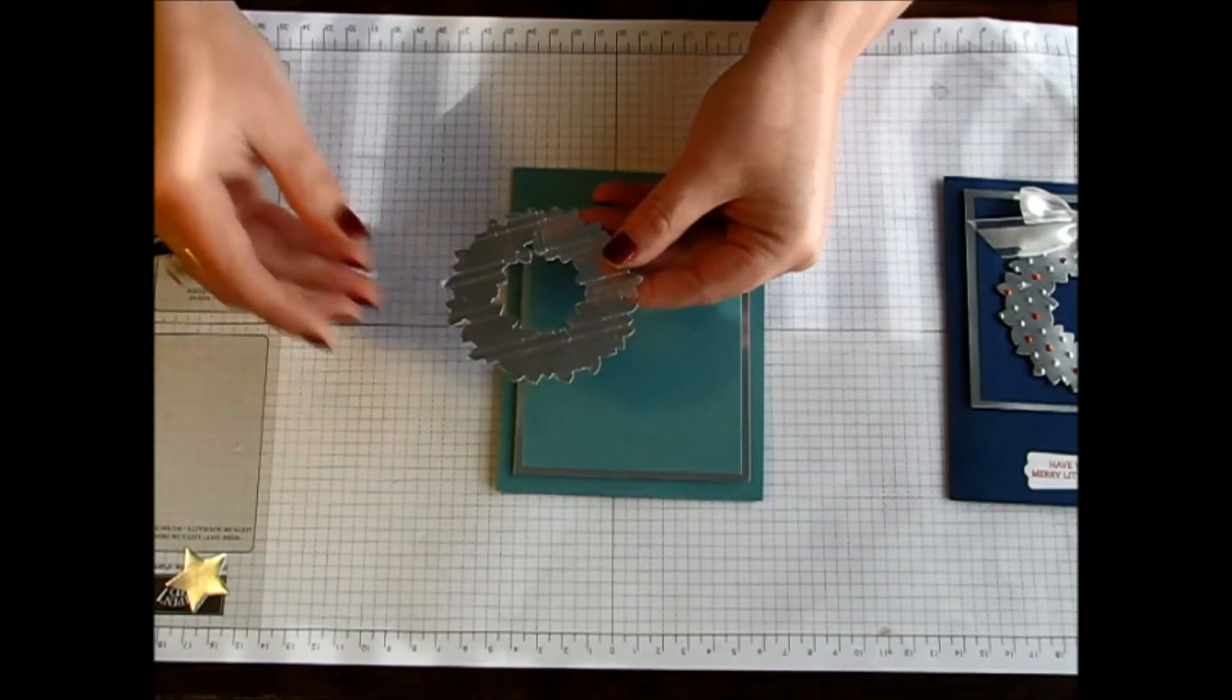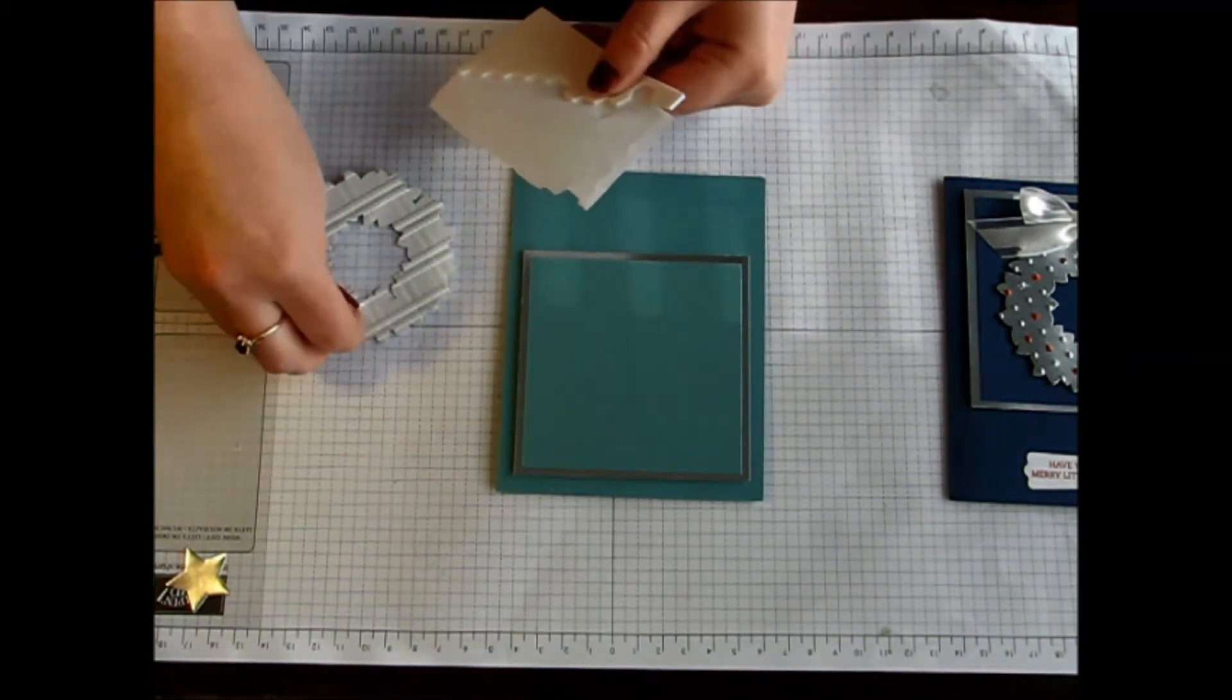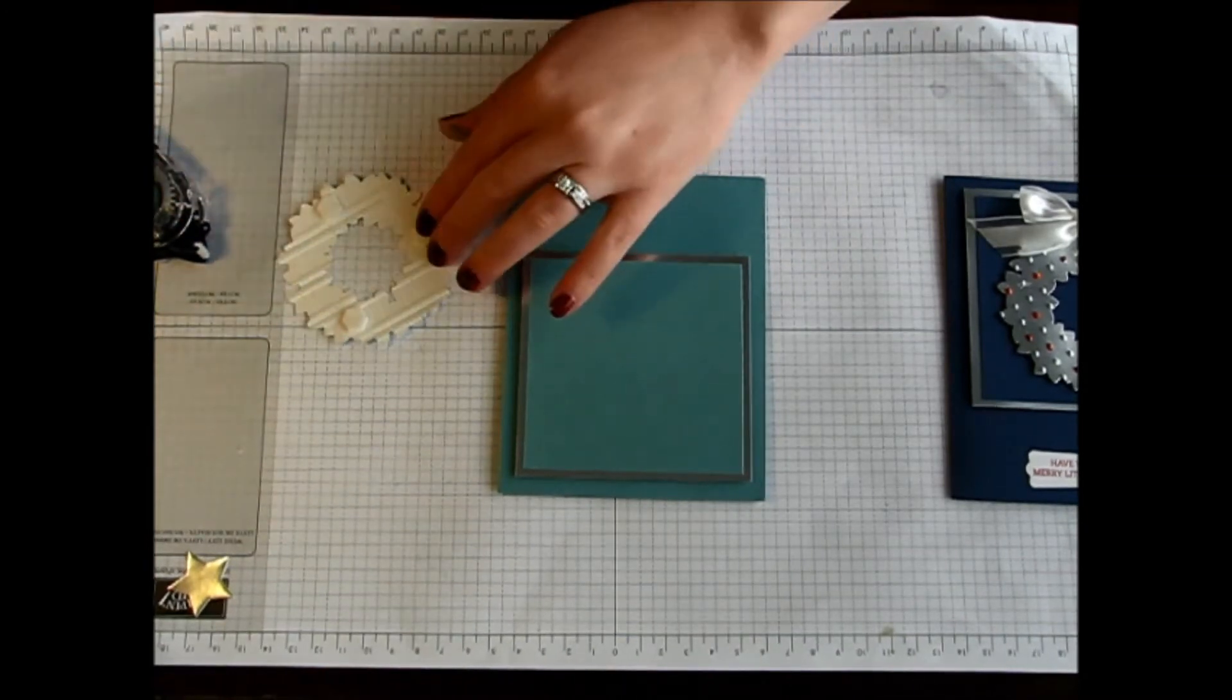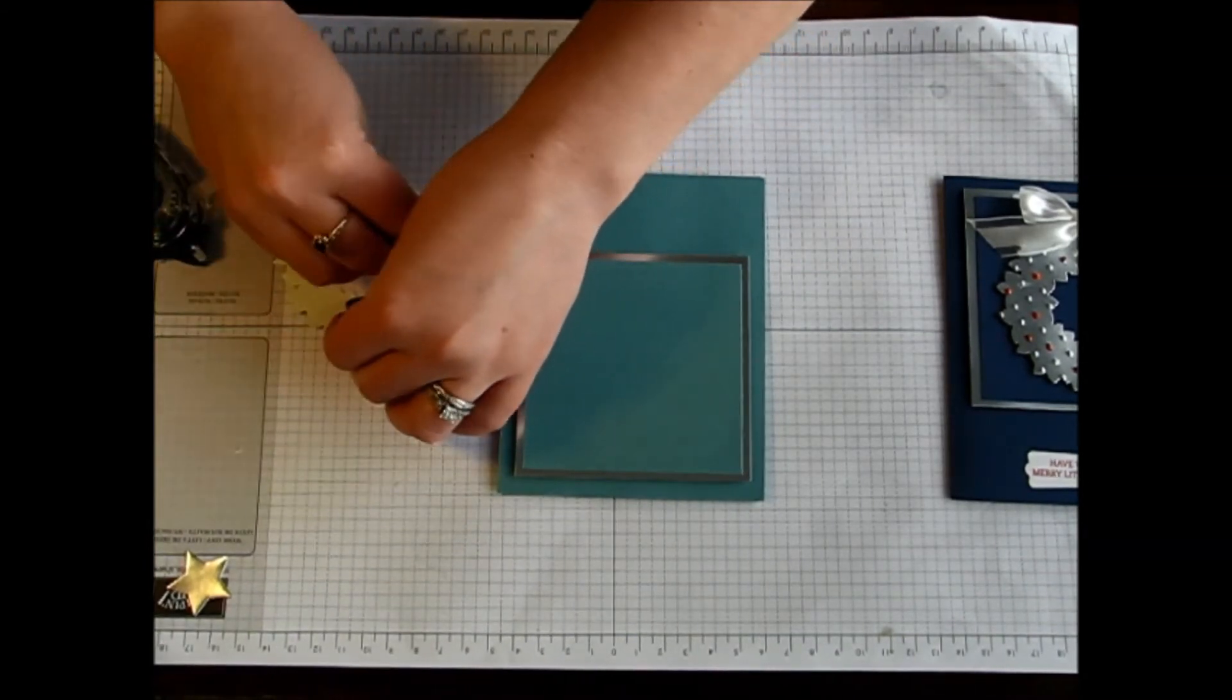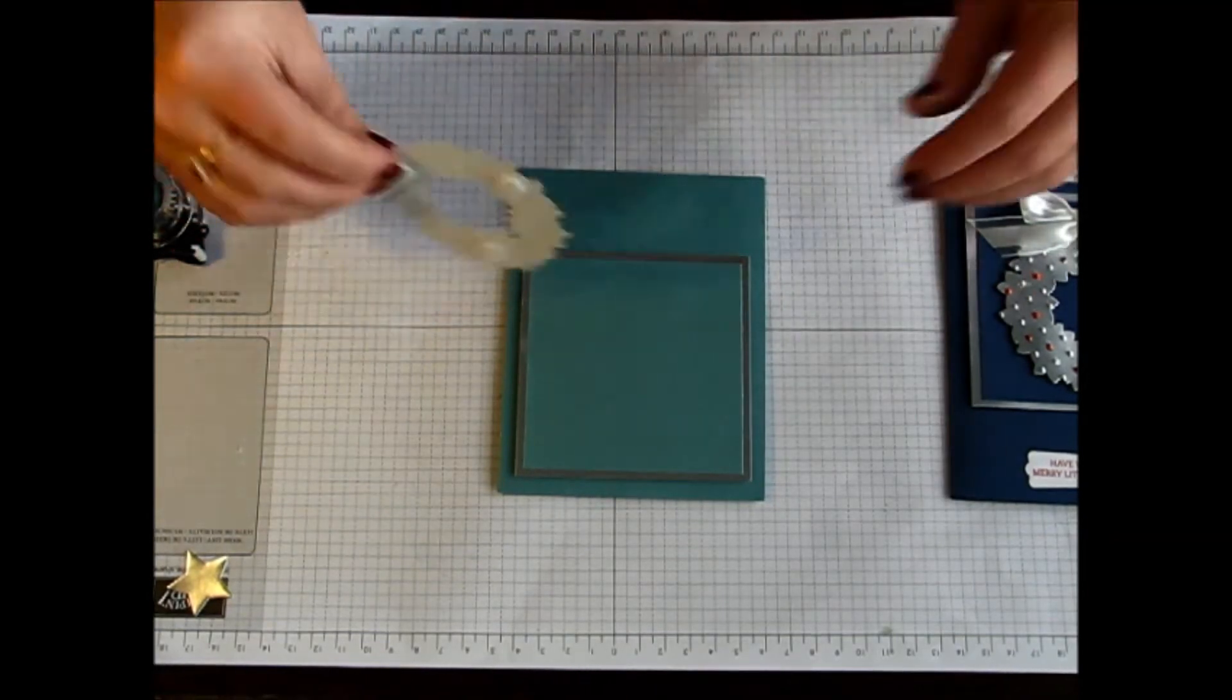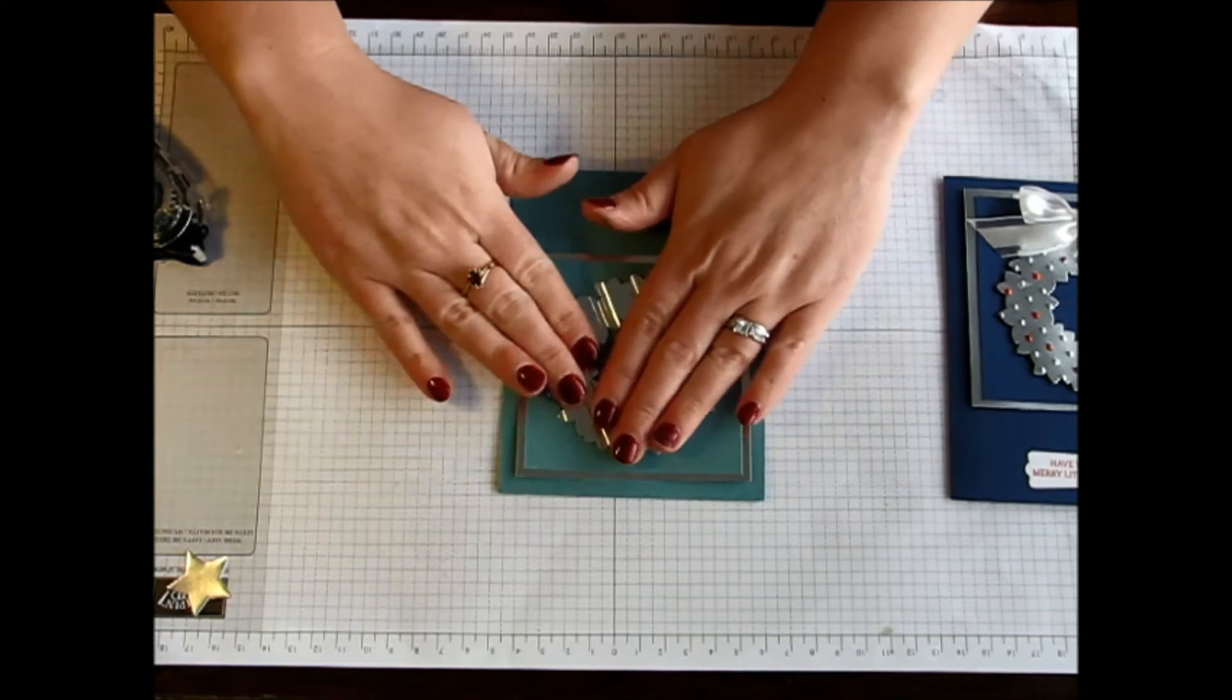So now I am just going to place this towards the top of my card. And then I am actually going to use dimensionals on my wreath as well. So I am just going to add some dimensionals, about three sort of in a triangle pattern there. Add those to the back of the wreath and then stick my wreath right on the center there.